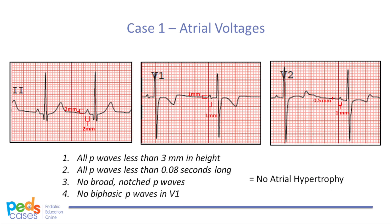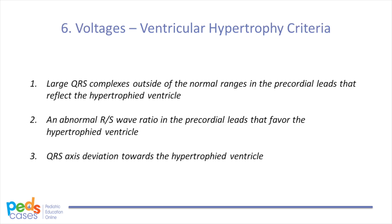Let's go back to our case. The length and height of the P-waves in leads 2, V1, and V2 are shown in the slides. The P-waves are less than 3 mm in height and under 0.8 seconds long. There are no broad notched P-waves, and there are no biphasic waves in lead V1. Therefore, there is no atrial hypertrophy in our patient.